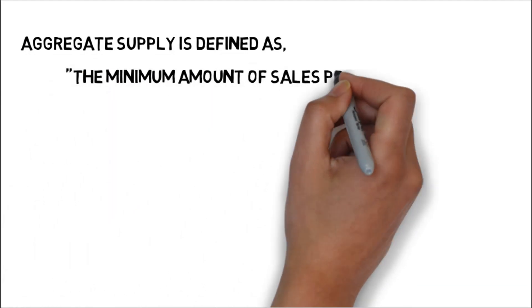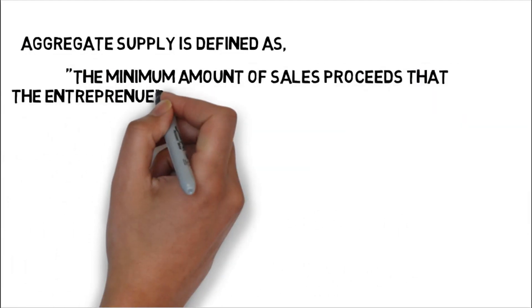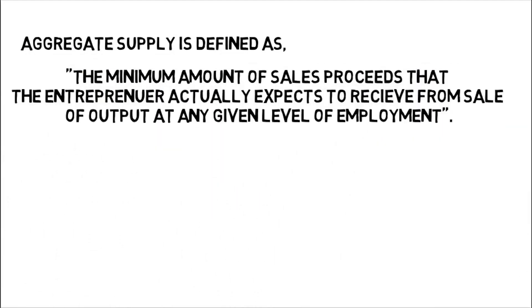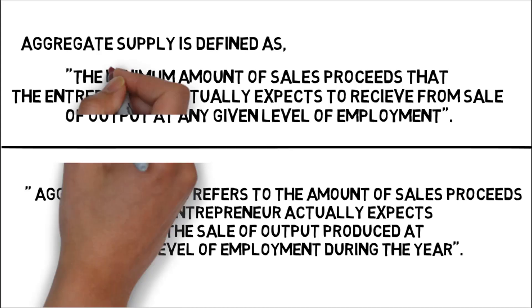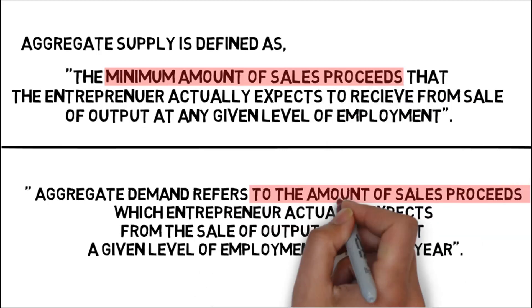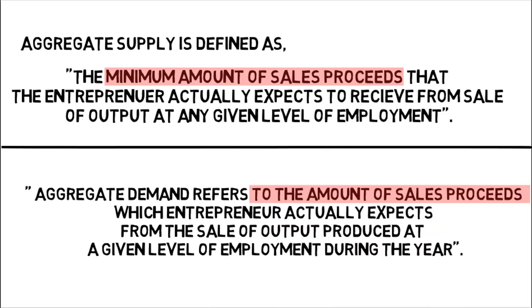Aggregate supply is defined as the minimum amount of sales proceeds the entrepreneur expects to receive from the sale of output at any given level of employment. If you compare this definition with aggregate demand, you'll come to know that the only difference here is in the term 'minimum sales proceeds.' Rest everything remains the same. However, that small part does change the meaning of the entire sentence.